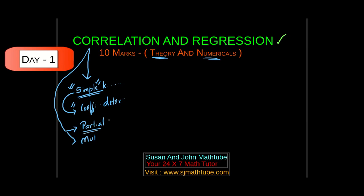In partial correlation, we keep one variable constant and study the other two. In multiple correlation, we study the combined effect of the dependent variable on the independent variables. Coming to regression, you have to study how to create a simple regression equation — that means in two variables — and then multiple regression.